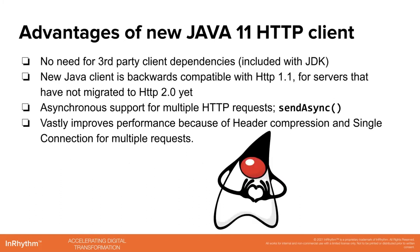Now, some of the advantages of the new Java 11 HTTP client. The main one is you don't need to manage dependencies from third-party clients, because the new client comes with your JDK. Another advantage is that this new client is backwards compatible with HTTP 1.1 and also provides backward compatibility for servers that have not migrated to HTTP 2 yet. The client also supports sending asynchronous messages over a single HTTP request via the sendAsync method, which I will demo. Overall, it vastly improves your connection because of the way it compresses data and transmits it over a single connection — instead of transmitting encoded text, we're transmitting binary frames.